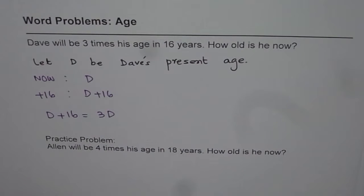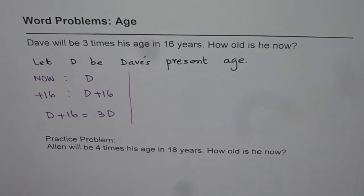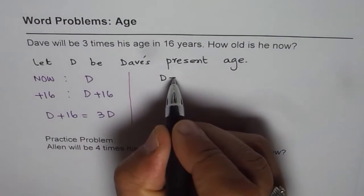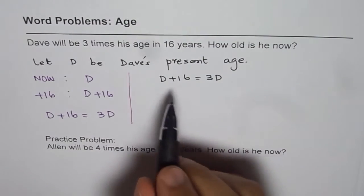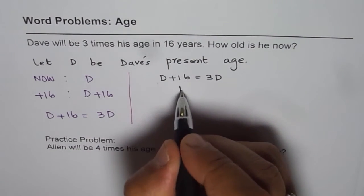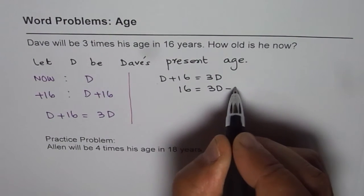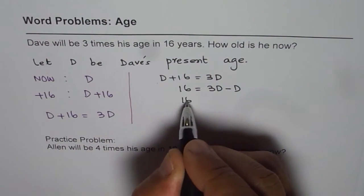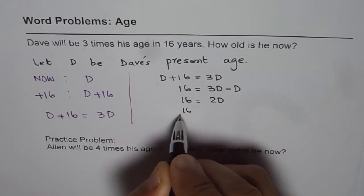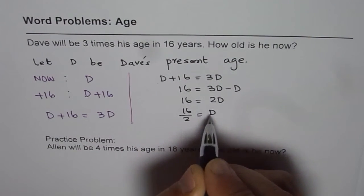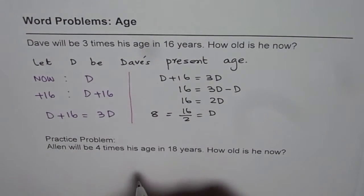So let us solve this equation and find the answer. D plus 16 equals 3D. We can take away D from both sides, because 16 equals 3D minus D. So 16 equals 2D. Dividing by 2, 16 divided by 2 gives us Dave's age, which equals 8.